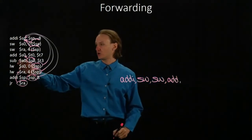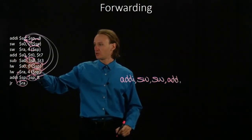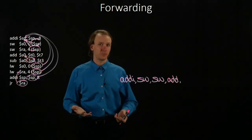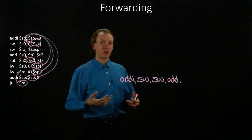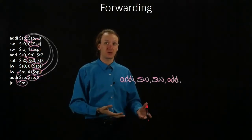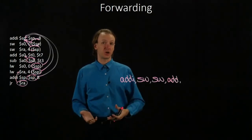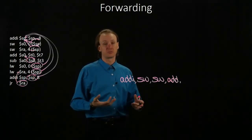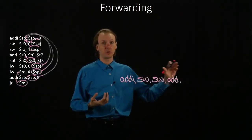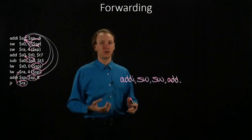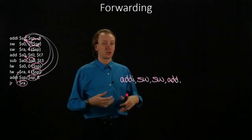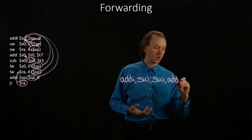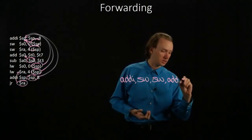Now we've got a subtract instruction. This one does depend on the results of the previous instruction, but I can forward those from the add instruction to the subtract instruction right after the ALU stage. So they're really just going from the ALU stage back to the ALU stage, and they're ready to go — so I can run the subtract instruction immediately as well.